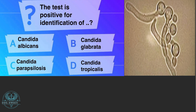Here is the next question. The test shown is positive for identification of which organism? Options: A) Candida albicans, B) Candida glabrata, C) Candida parapsilosis, D) Candida tropicalis. The correct answer is option A, Candida albicans.